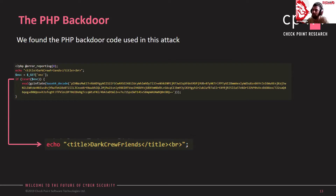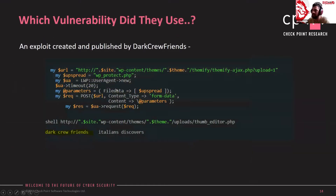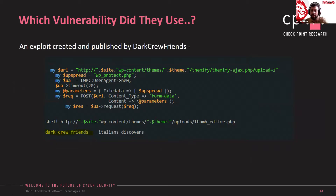We still hadn't answered: what is the vulnerability? Based on our research, the victim servers host content management sites such as WordPress and Joomla. These platforms have multiple unrestricted file upload vulnerabilities in which an attacker can upload a malicious file to the vulnerable server. One of those vulnerabilities had an exploit created and published by DarkRoof Friends. Based on their previous exploits, this group is very familiar with this type of vulnerability. We can assume the attacker used an unrestricted file upload vulnerability to establish their backdoor on the victim server.